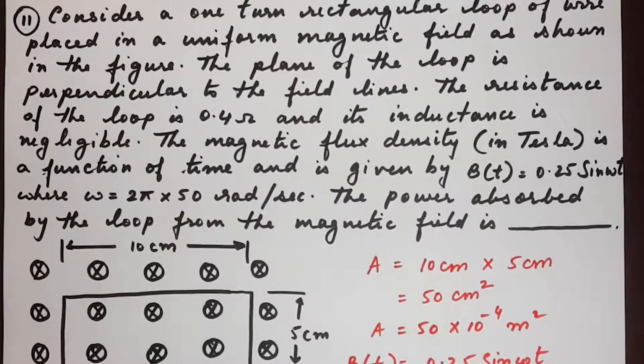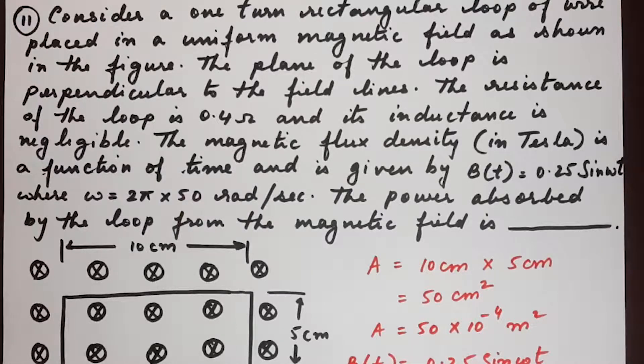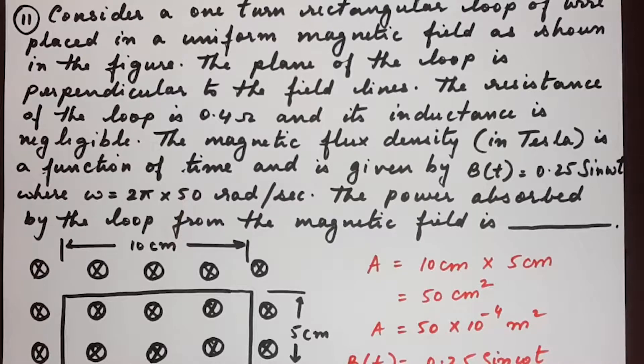Here's the next question, number 11. Consider a one-turn rectangular loop of wire placed in a uniform magnetic field as shown in the figure. The plane of the loop is perpendicular to the field lines. The resistance of the loop is 0.4 ohms and its inductance is negligible. The magnetic flux density is a function of time and is given by b of t equals 0.25 sin omega t where omega is 2 pi into 50 radians per second. The power absorbed by the loop from the magnetic field is dash.